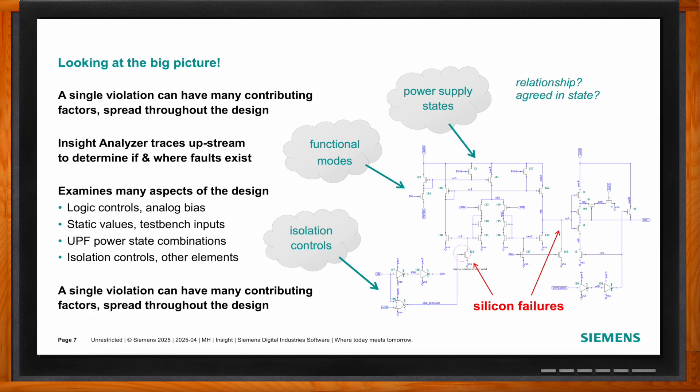Automatic circuit recognition includes things like level shifters, logic gates, and analog structures. The tool uses this recognition during checking to understand the circuit, and also performs a sanity check to make sure it's interpreting the design the way the designer intended. Designers often come up with novel implementations of level shifters or isolation controls, so ensuring they've been identified correctly and are protecting the right parts of the circuit is critical.